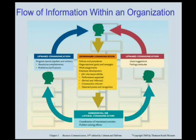Upward communication is generally feedback to downward communication, such as responses to management requests for information. It keeps management informed about employees' attitudes, results and accomplishments, and problems that need clarification. Employees should realize that upward communication can be risky, as it may be misleading if employees tell superiors only what the supervisors want to hear. Horizontal or lateral communication describes communication between people or organizational units on the same level. Though not often included on flow charts, it is the primary means of coordinating functions within an organization and is especially important within companies that use cross-functional work teams.